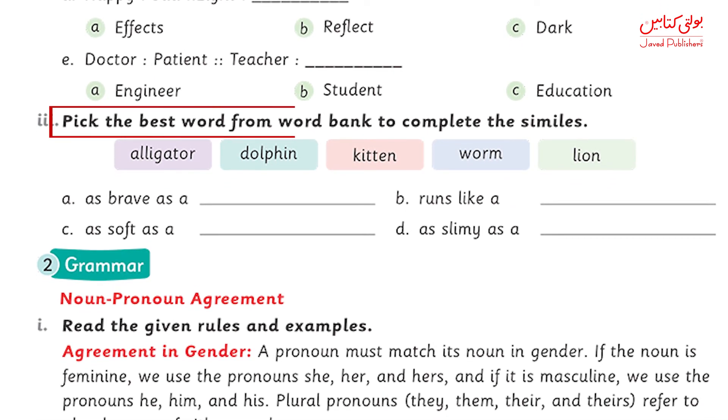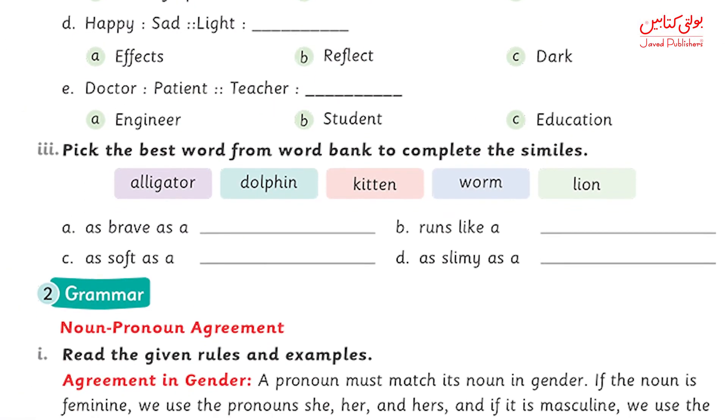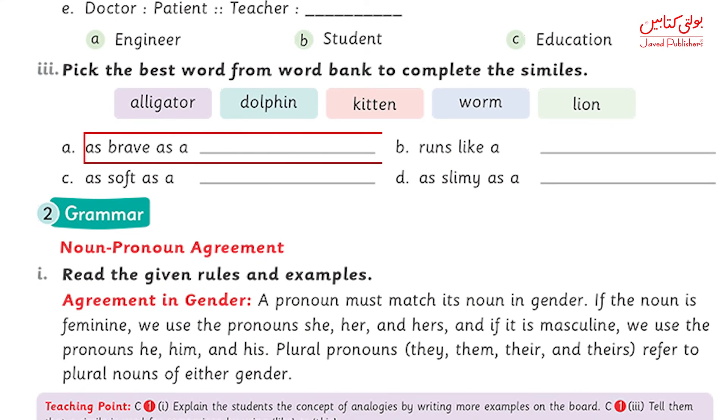The last question is: pick the best word from the word bank to complete the similes. First of all, what are similes? Similes are also a kind of comparison, but you use the words 'like' or 'as' with them. For example: Ahmed was as brave as a lion. Here we are comparing Ahmed with a lion. So when you compare somebody with some other thing, you are making similes. For example: as brave as a lion, runs like an alligator.